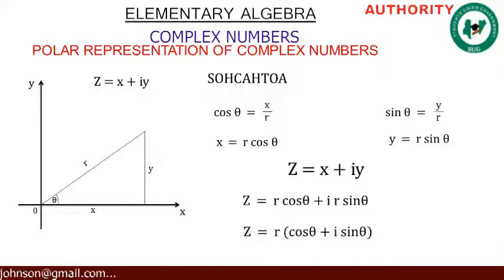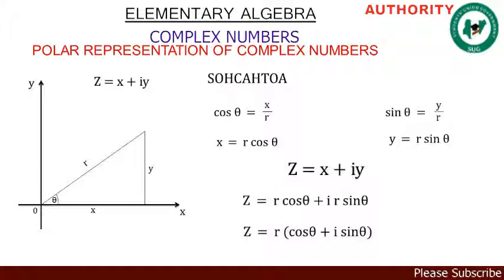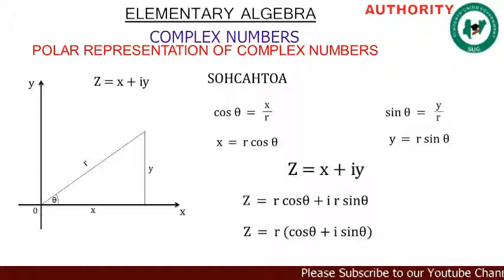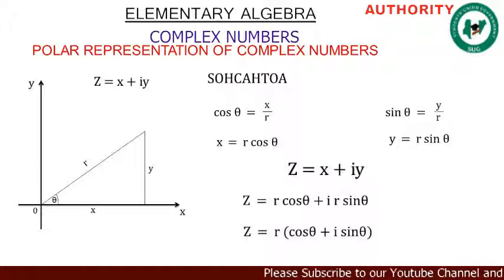This is what we call the polar representation of a complex number. The polar representation states: z equals r(cos θ + i·sin θ). Now let's take some examples.